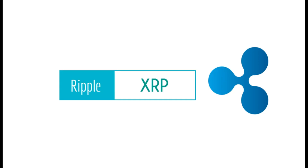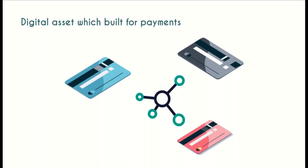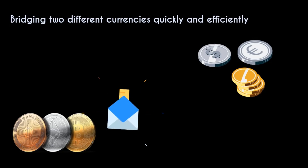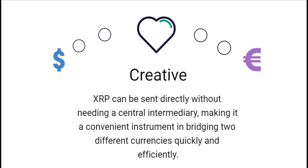What is Ripple? I am Zach from KK Technologies. Today we investigate all details about the digital asset built for payments — XRP. The main aim of XRP was to form the basis of a system of direct asset transfers in real time, which would offer a cheaper, more transparent, and secure alternative to current transfer payment methods such as SWIFT. It is the native digital asset on the XRP Ledger, an open-source blockchain technology that can settle transactions in three to five seconds. XRP can be sent directly without needing a central intermediary, making it a convenient instrument for bridging two different currencies quickly and efficiently.